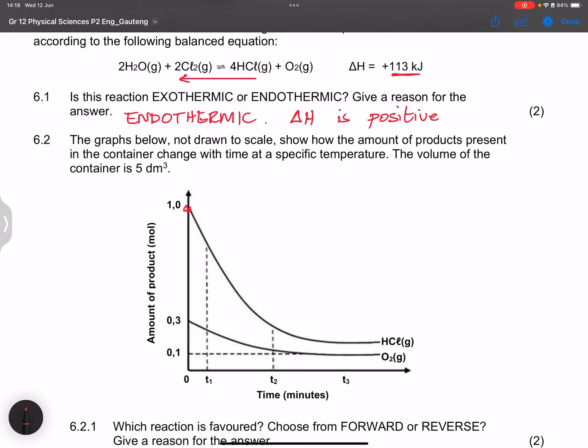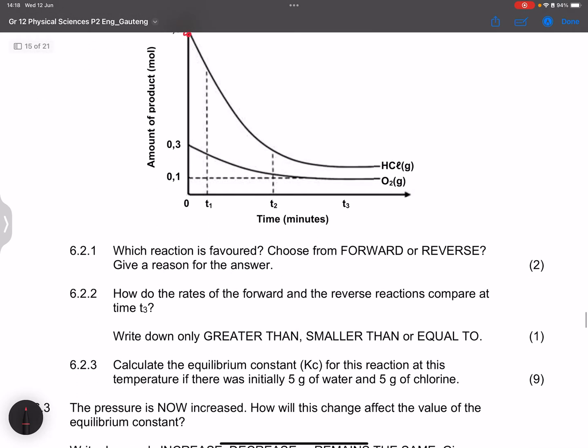So they're asking which reaction is favored. Choose from forward or reverse and give a reason for your answer. So it is definitely going to be the reverse reaction. And they said give a reason because our products are decreasing or the amount of products are decreasing.